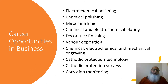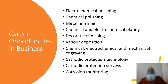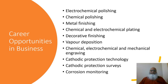The next couple of slides show career opportunities for a corrosion engineer in their own independent business. These include electrochemical polishing, chemical polishing, metal finishing, chemical and electrochemical plating, decorative finishing, paper deposition, chemical, electrochemical and mechanical engraving, cathodic protection technology, cathodic protection surveys, and corrosion monitoring.